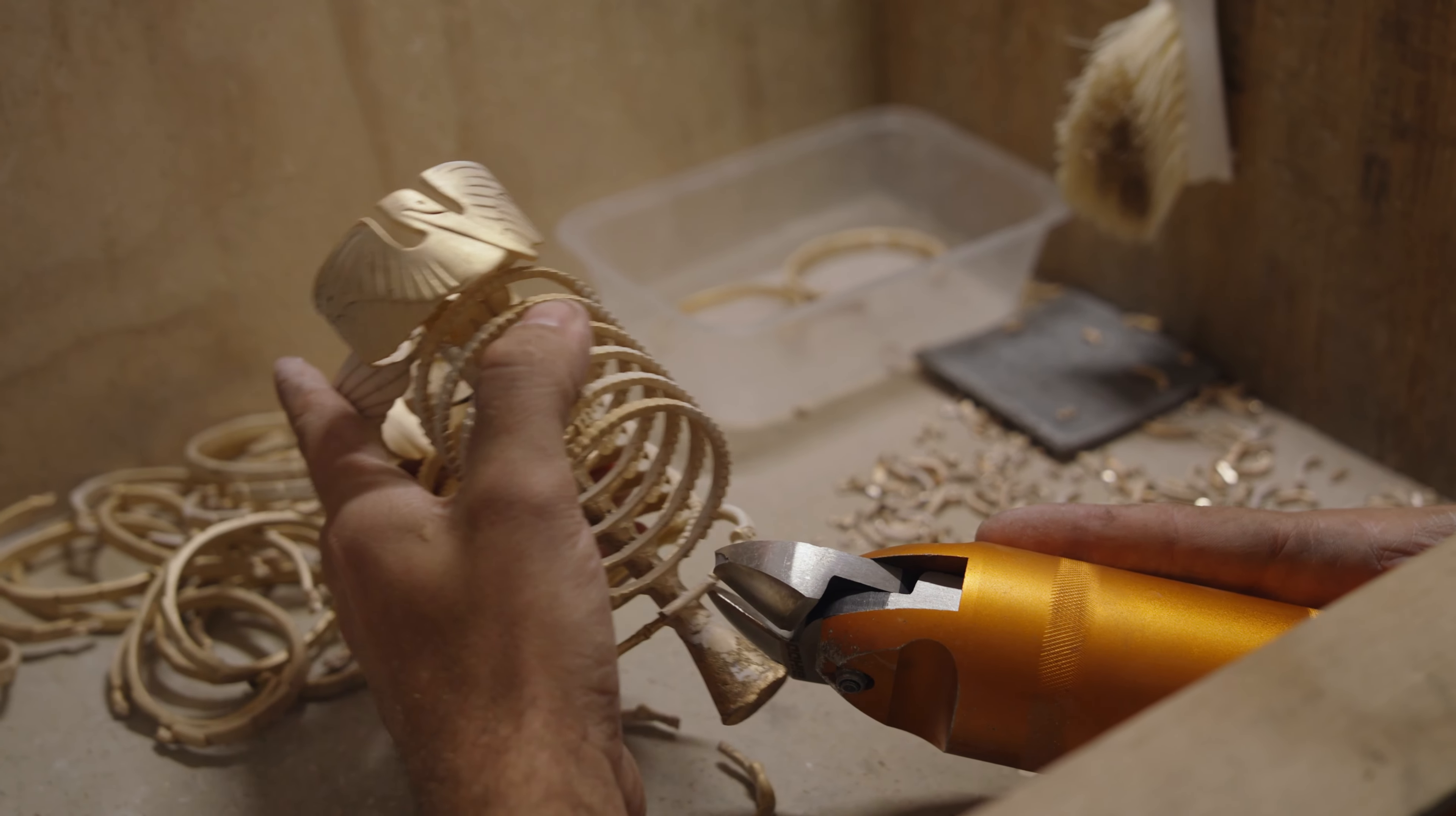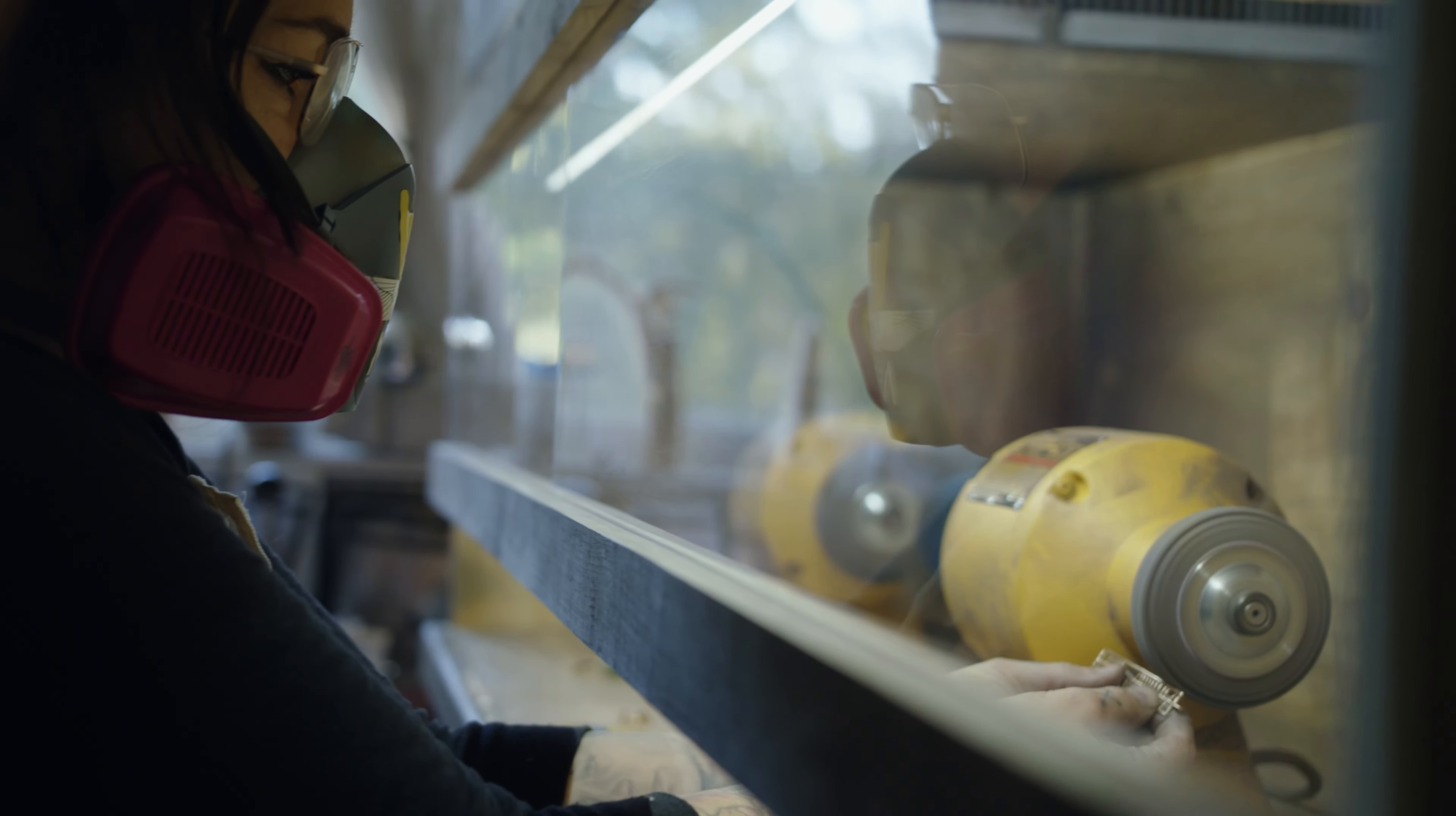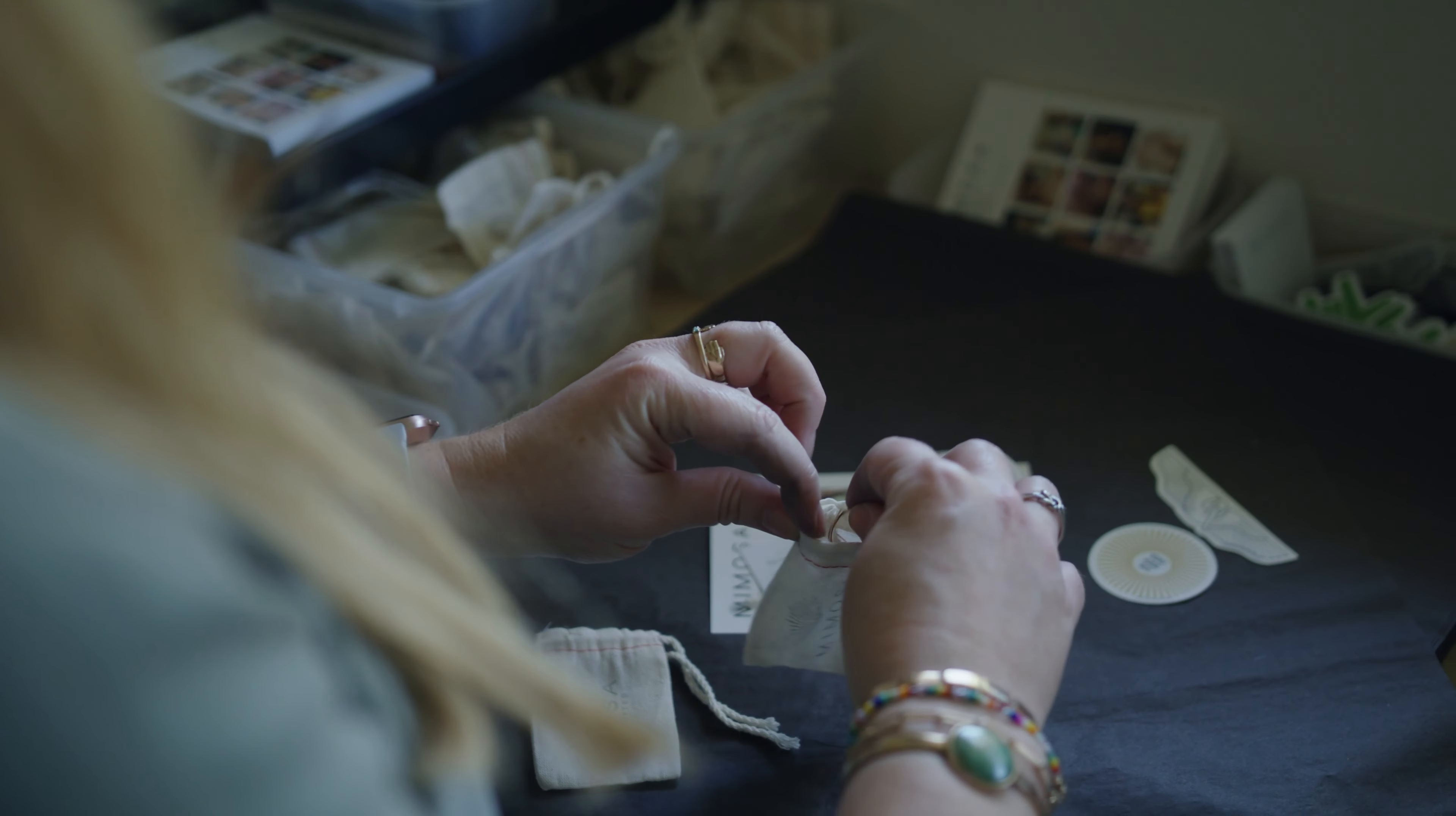The jewelry is clipped from the main sprue and tumbled with abrasive media to remove any investment residue as well as start to smooth rough edges. From there, the jewelry is buffed and shined and sent to quality control. Once approved, the piece is ready for its new home.